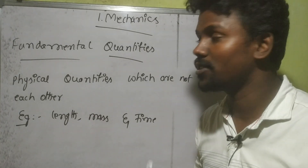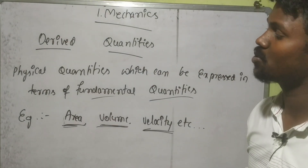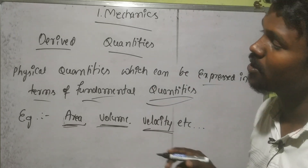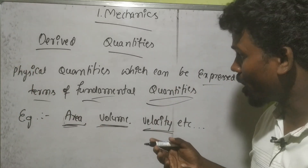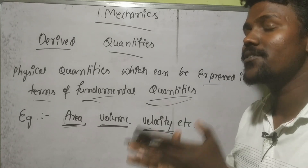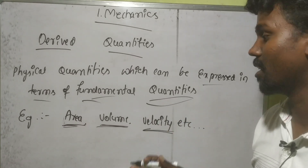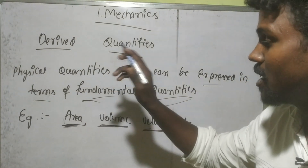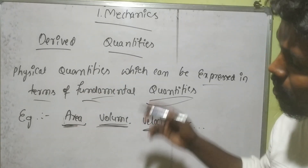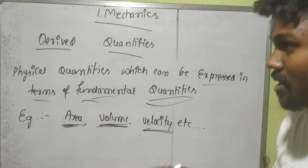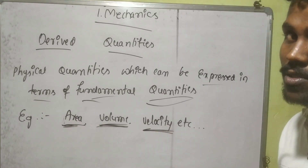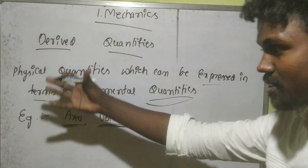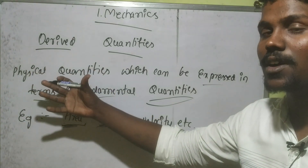Next: derived quantities. Derived quantities are physical quantities which can be expressed in terms of fundamental quantities. For example, area is expressed in terms of length, volume is derived from length, and velocity is derived from distance and time. So any physical quantity expressed using fundamental quantities is a derived quantity.